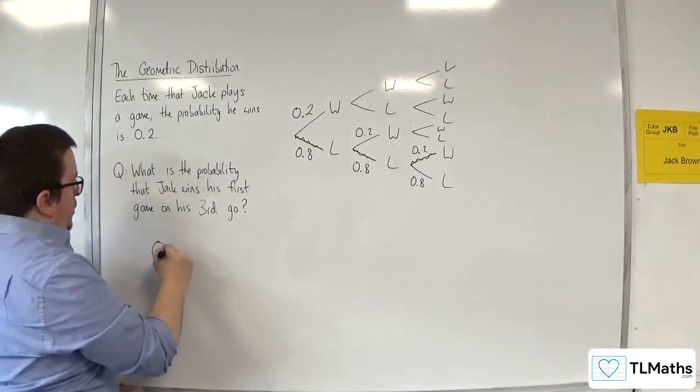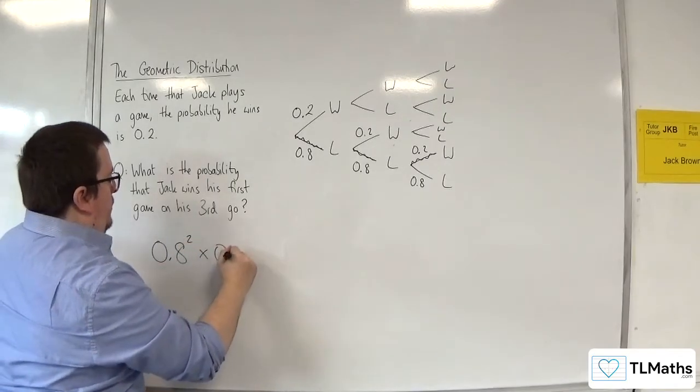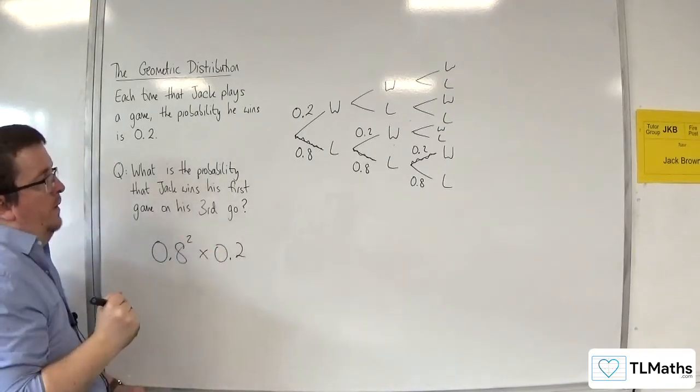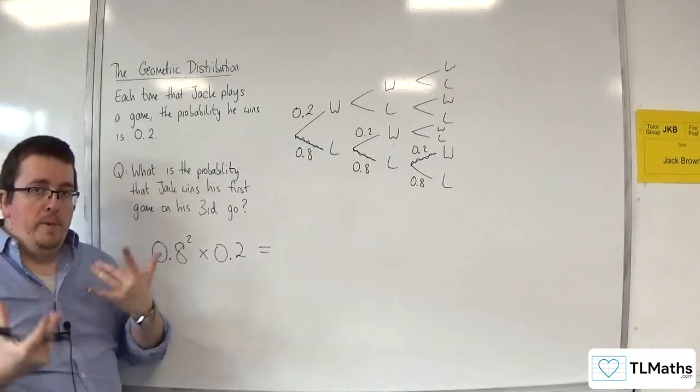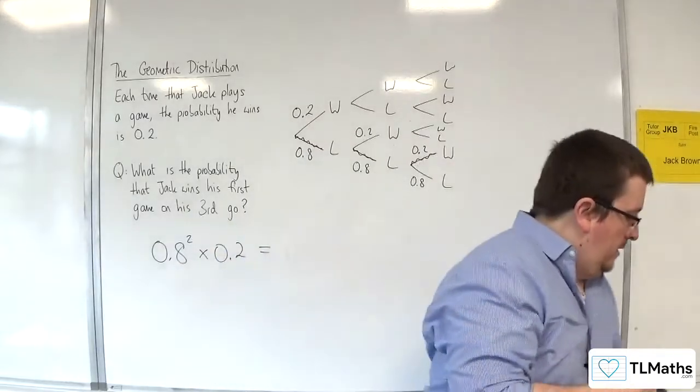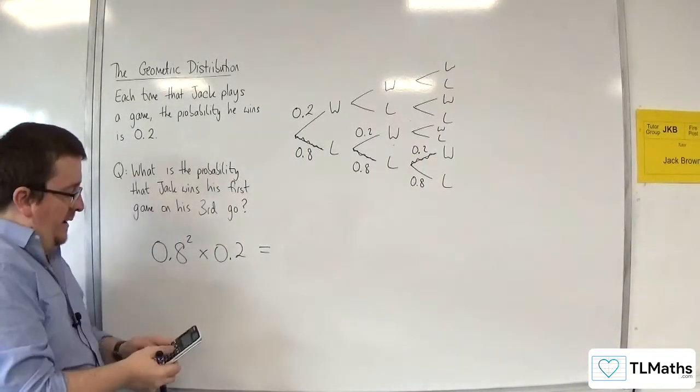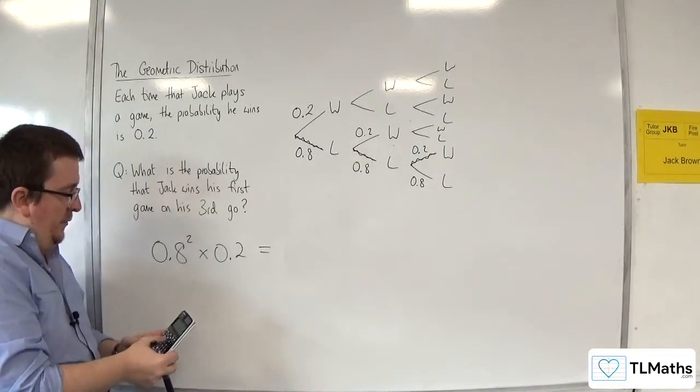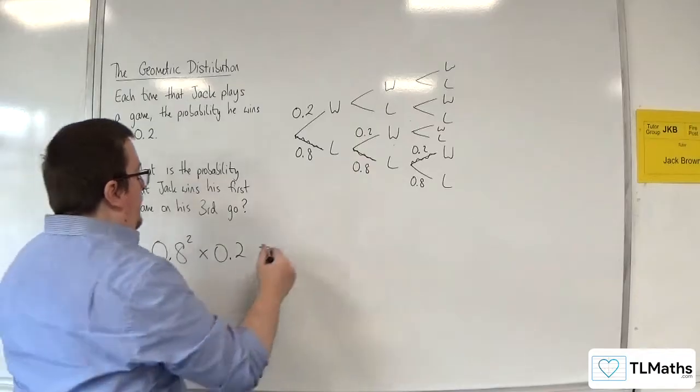This would be 0.8 times 0.8 times 0.2. This is going to feel very binomial distribution-esque, and they are very closely linked. So we've got 0.8 squared times 0.2, and so that would be 0.128.